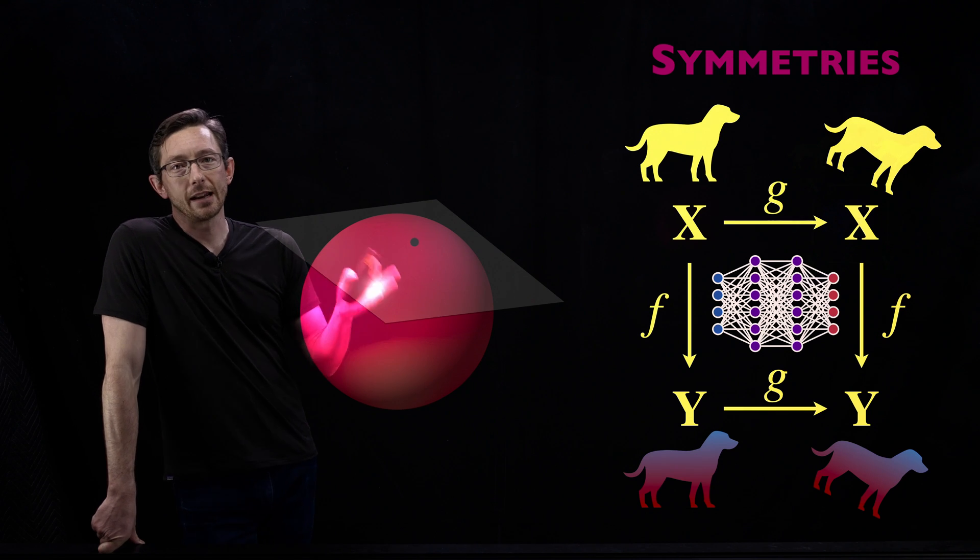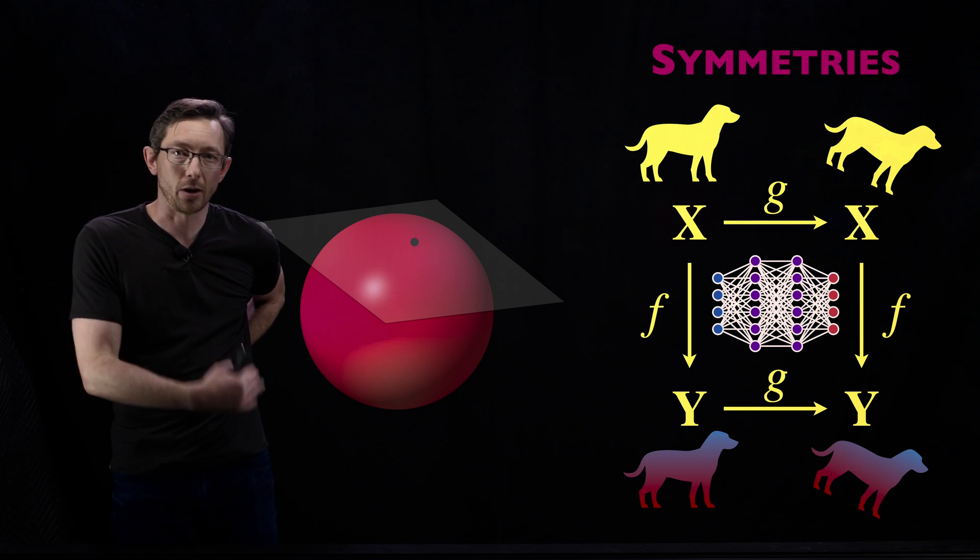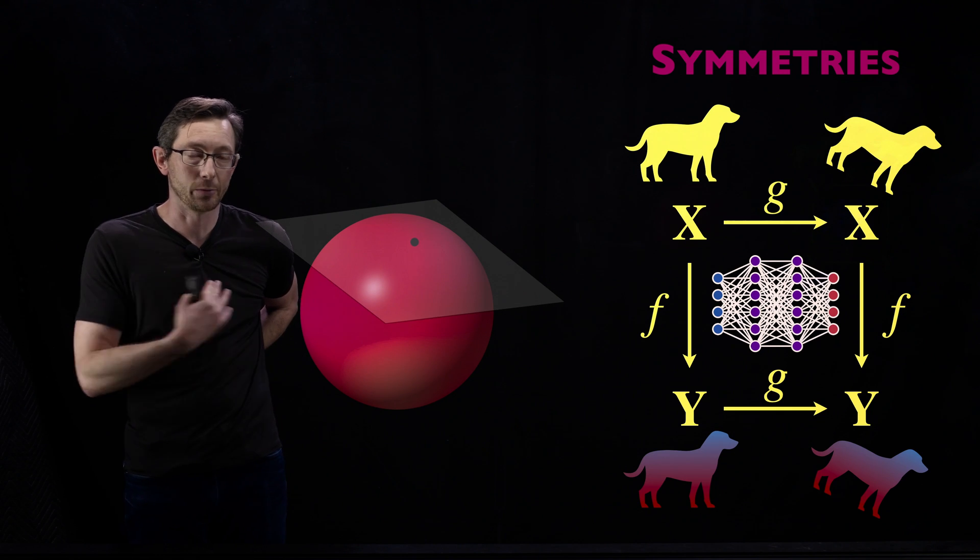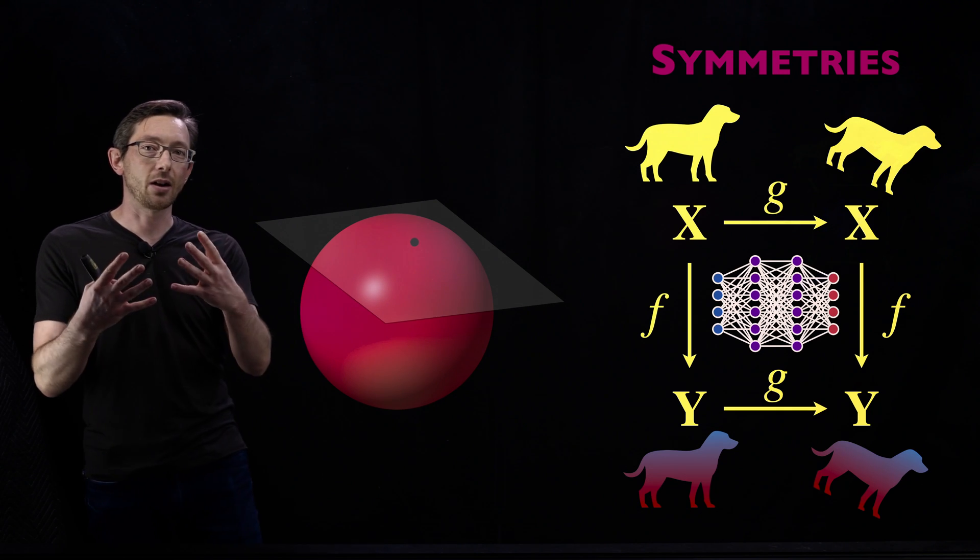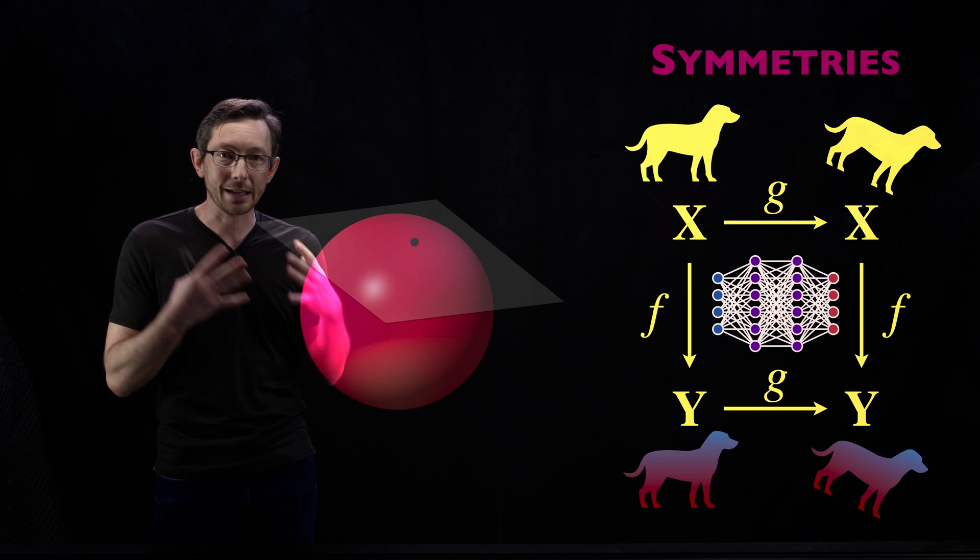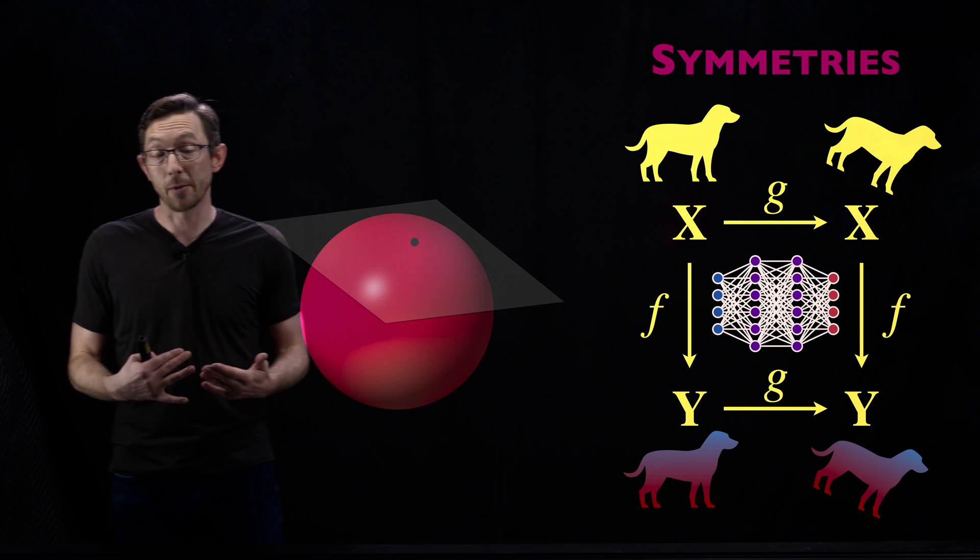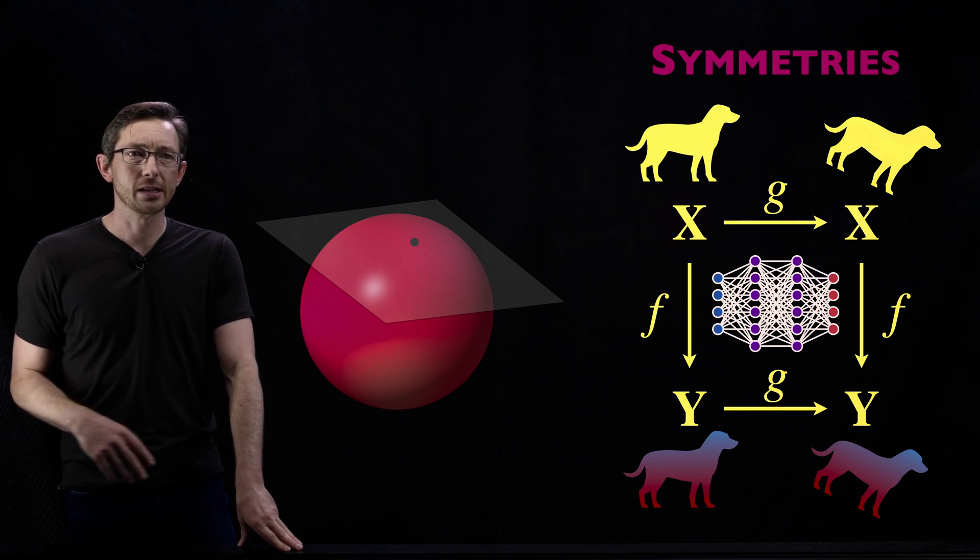Symmetries are such a fundamental part of how we encode physics in the real world. They are an incredibly important way to guide or bias or constrain your machine learning model to be more physical. We'll talk a lot about symmetries.